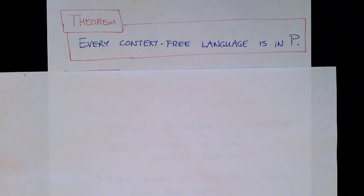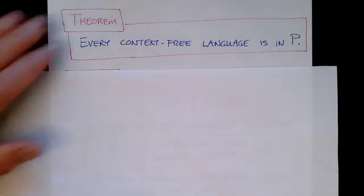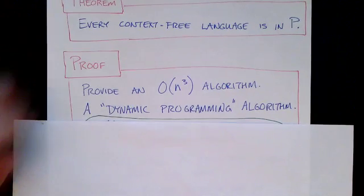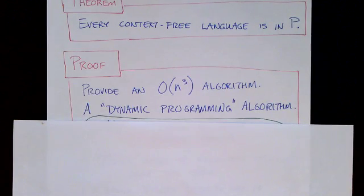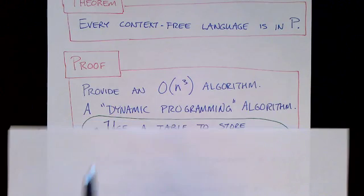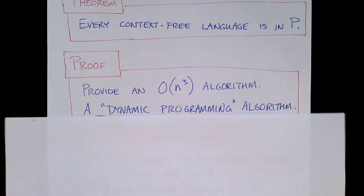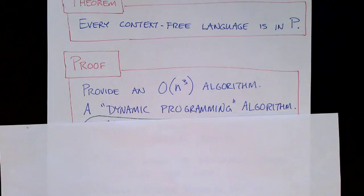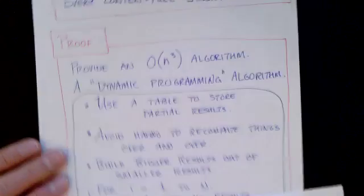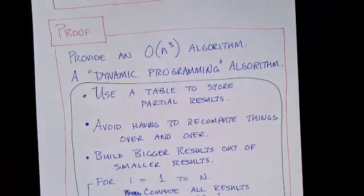Every context free language is in class P. And the reason we know this is because we have an algorithm to parse any context free grammar that runs in order n cubed time. Most context free grammars can be parsed more efficiently. But in the worst case we can do it with this algorithm that requires n cubed time.